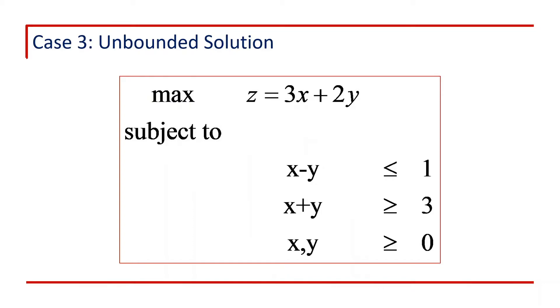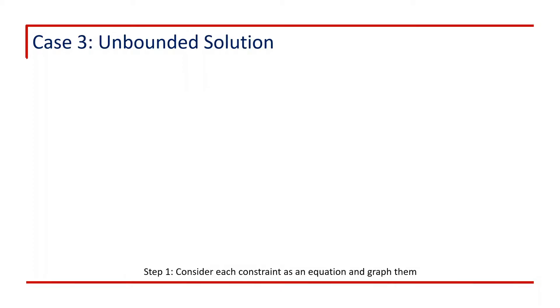Let's consider a small example of two variables to understand the unbounded solution case. The objective function is to maximize z, which equals 3x plus 2y, subject to two constraints: first, x minus y less than or equal to 1, and second, x plus y greater than or equal to 3. Both variables x and y are positive, so x, y is greater than or equal to 0. Let's go step by step.